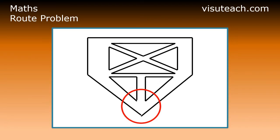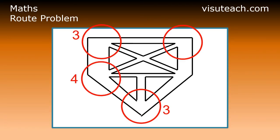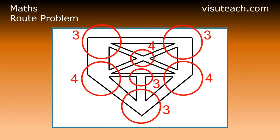Looking at the fourth housing estate, D, we get the following. This housing estate has four vertices of degree 3 and three vertices of degree 4. It does not have less than three vertices of odd degree, therefore it cannot be the answer.